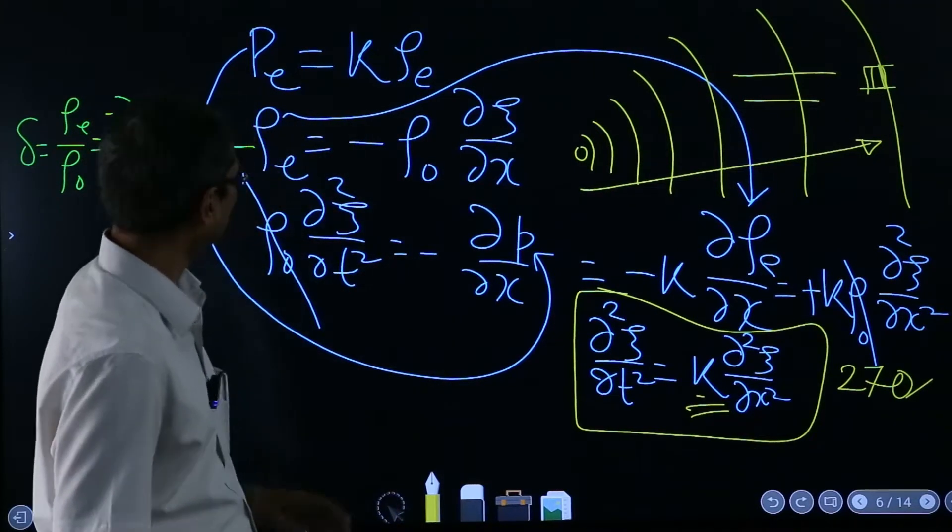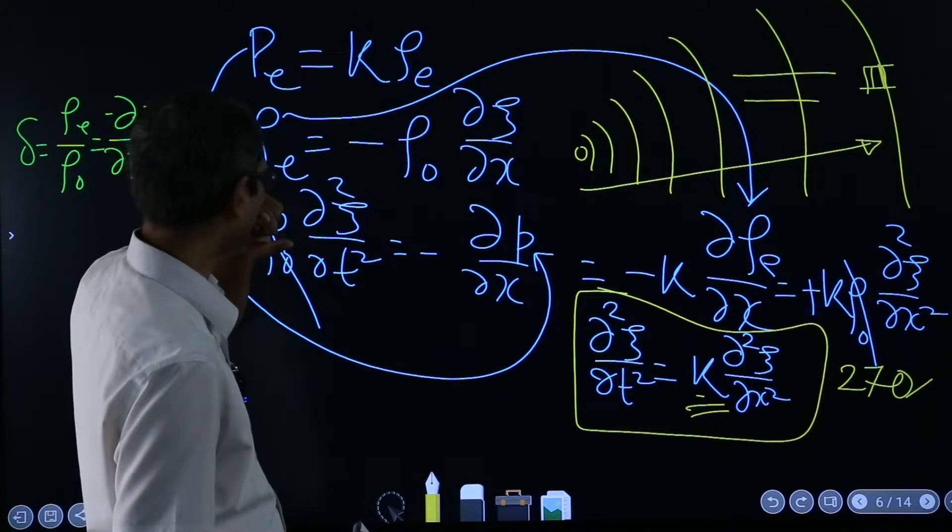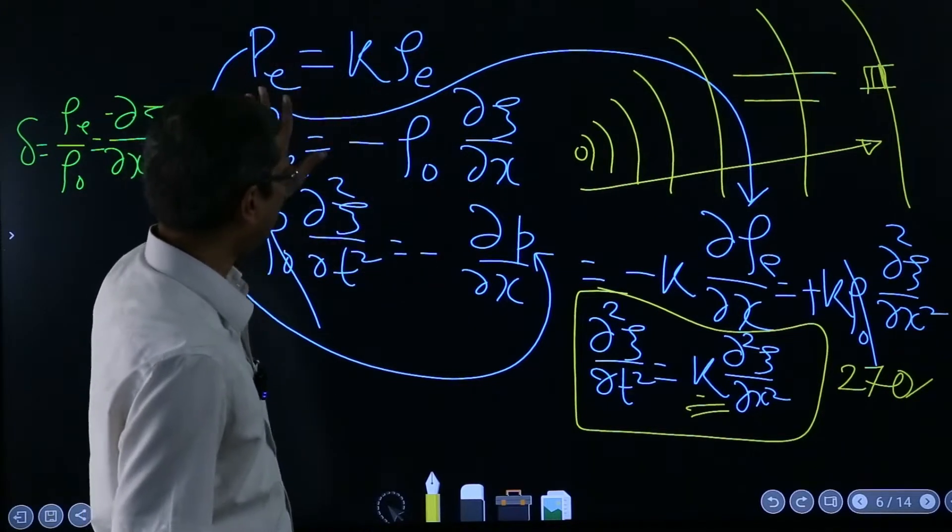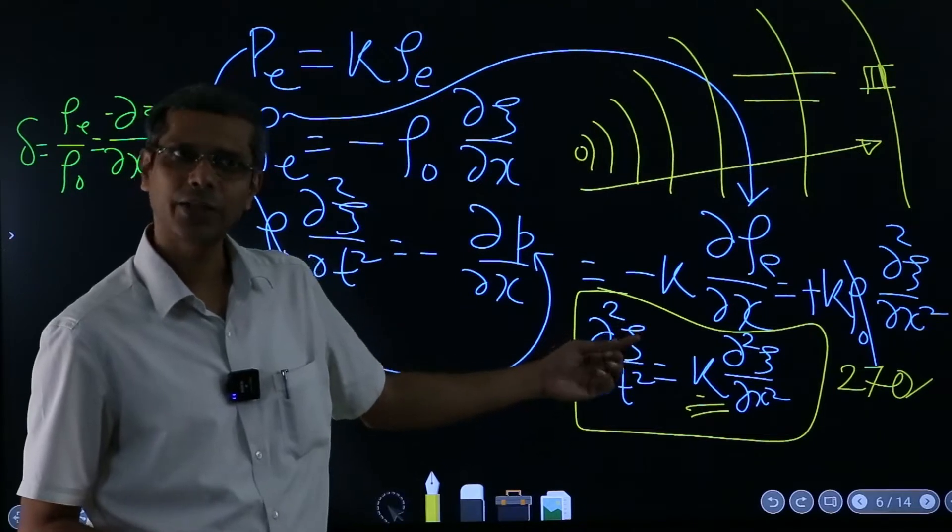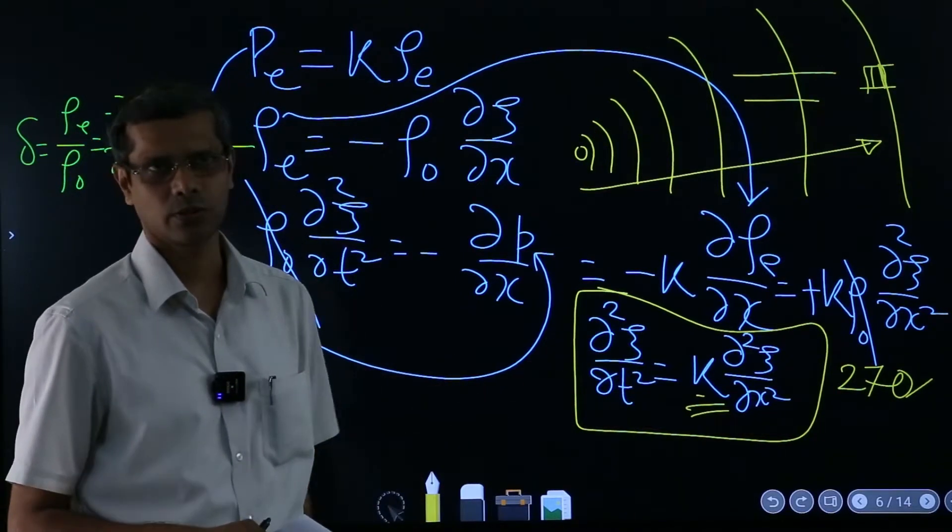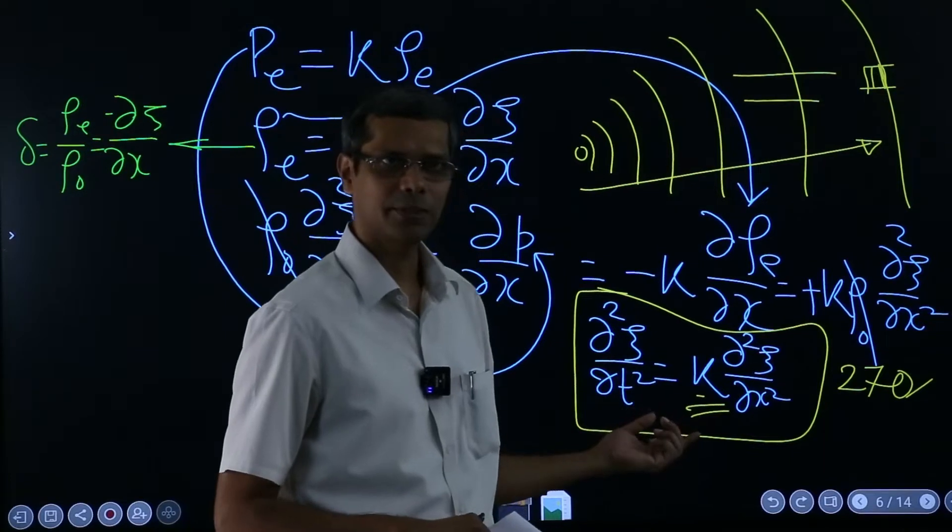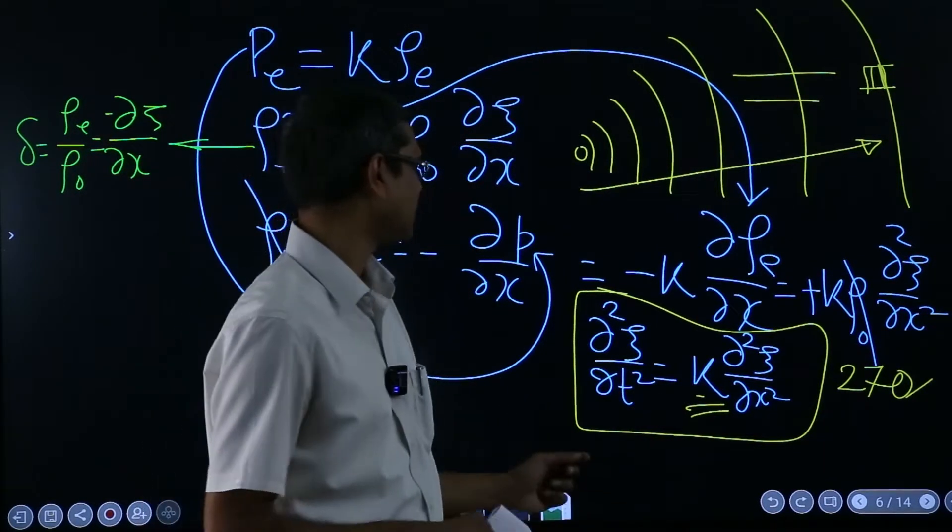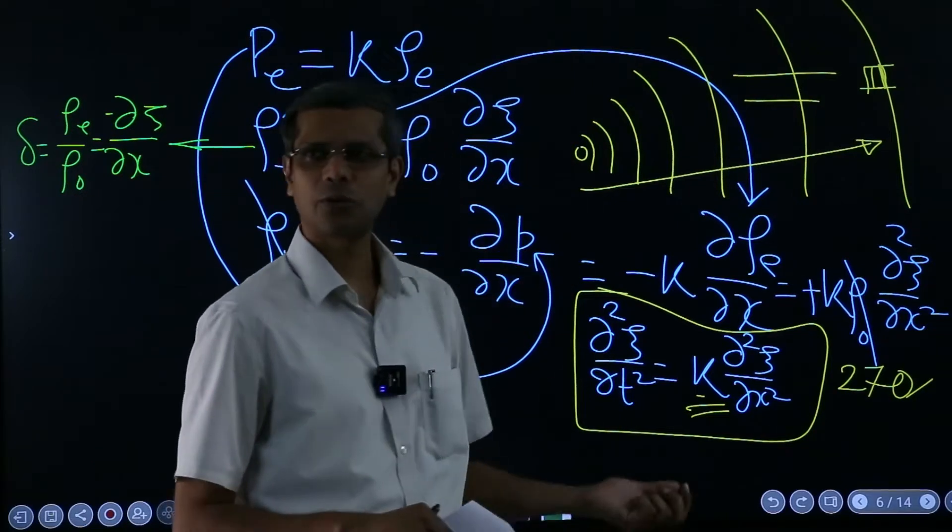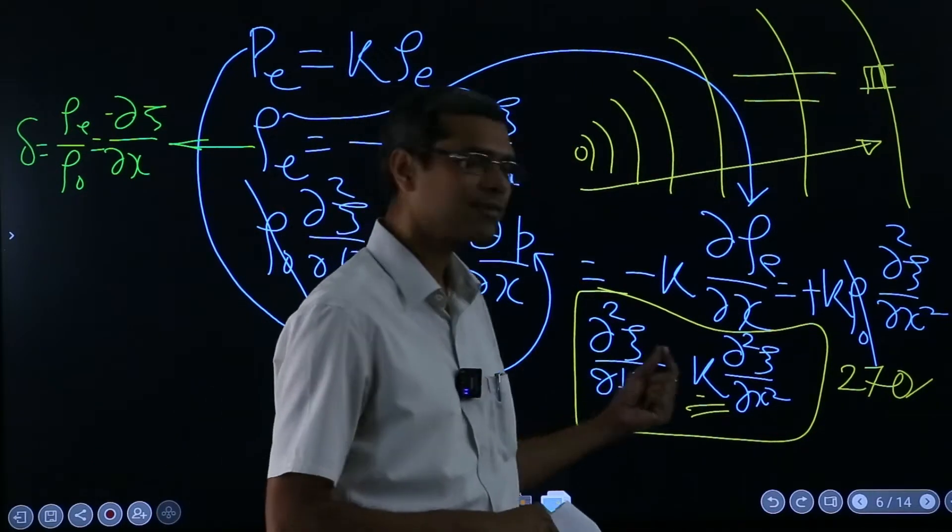Now, the point is which I want to make now, you could have eliminated xi and you could have written that in terms of pressure also and exactly the same equation you would get. And in fact, the velocity also follows the exact same equation.